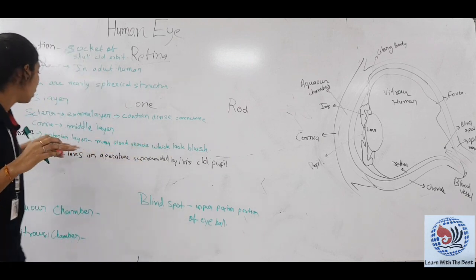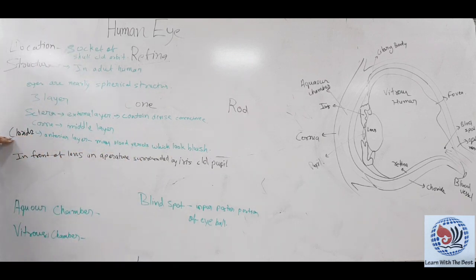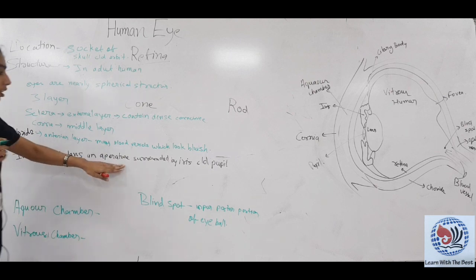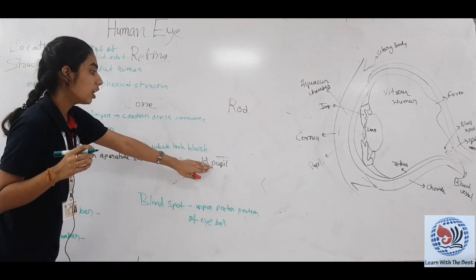At the anterior portion of the choroid, it becomes thick and forms ciliary body. When it is thin, it is in the posterior portion of the eye. In front of the lens, an aperture surrounded by iris is called pupil.